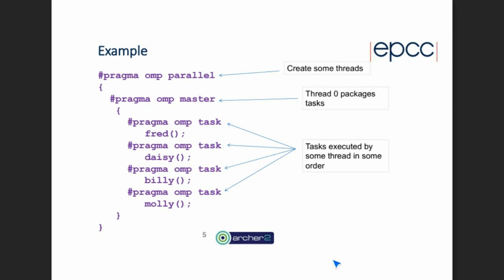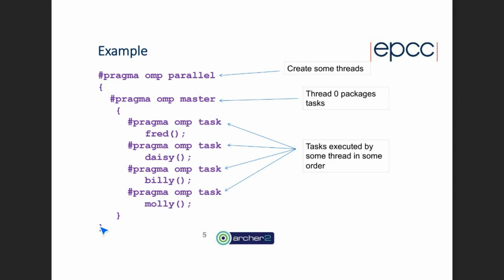It looks like we've got a pretty good mixture between Fortran and C/C++ programmers — that's useful information, so I'll make sure to mention anything special to both or all the base languages. Here's a very simple example to start with. The basic pattern for tasks is to get one thread to generate the tasks, and then all the other threads in the parallel region are available to execute them. In this case, each of these function calls — Fred, Daisy, Billy, and Molly — is a separate task.